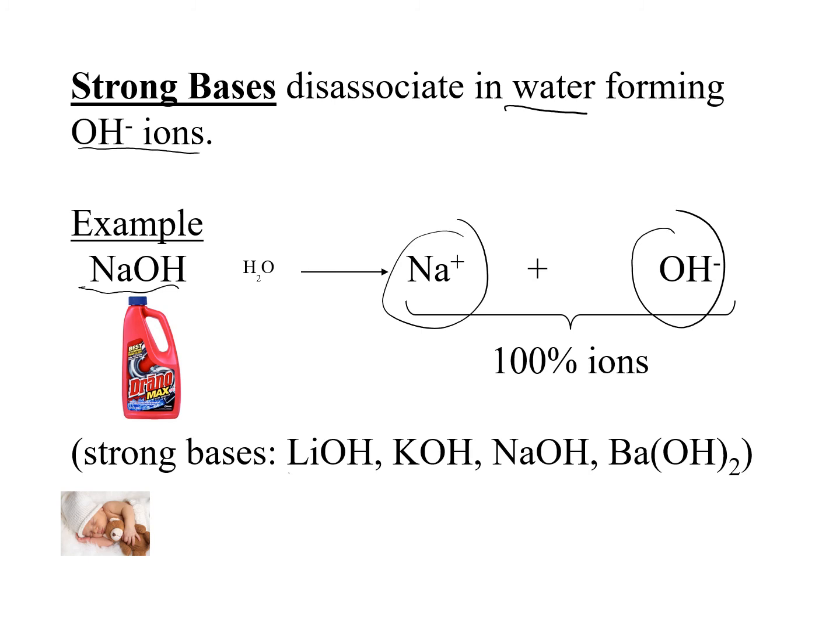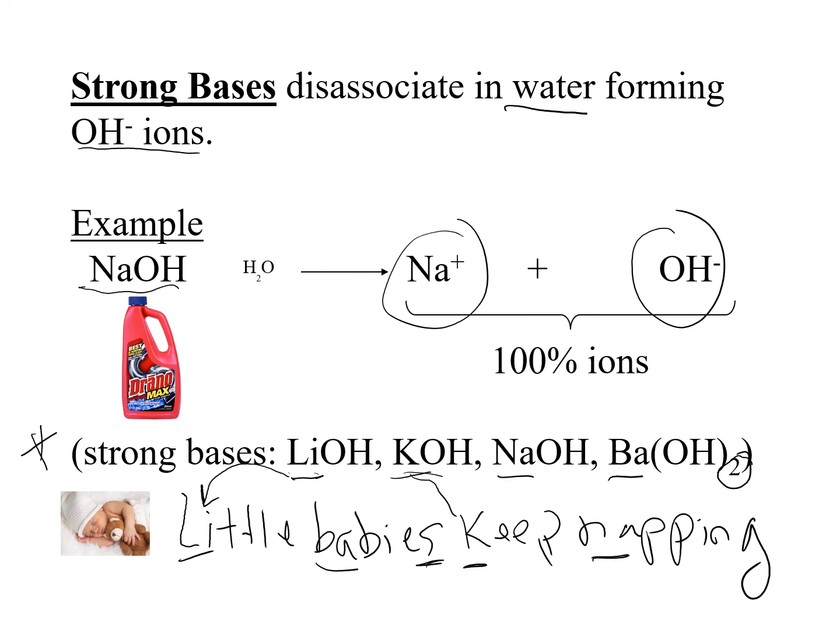There's four strong bases that you need to remember the formulas for. And I have a sentence that was developed by a student to help remember this. And their sentence was little babies keep napping. So the Li would go with the little. The Ba is in barium. Notice this one has two hydroxide ions. So this one is plural for babies. And then K is our potassium in the keep. And Na is in napping. So again, a base forms hydroxide ions. So they all end with OH, a polyatomic ion. OH negative, we learned before, was called hydroxide ions. And then it's just remembering the first four elements that form our four strong bases.